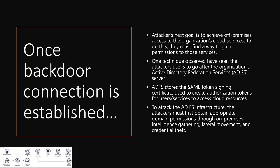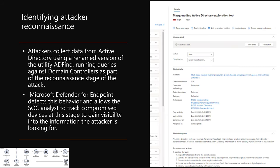If you're able to forge that SAML token for ADFS, it's game over — you can get into cloud services and exfiltrate data without being noticed. How do we identify that the attacker is performing reconnaissance? Attackers collect data from on-premises Windows Server Active Directory using a renamed version of the utility ADFind, running queries against domain controllers. Microsoft Defender for Endpoint can detect this behavior and allows an analyst to track the compromised device to gain visibility into what the attacker is searching for. In the screenshot from Defender for Endpoint, we can see the ADFind tool in use and the attacker collecting data and performing reconnaissance.